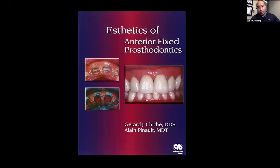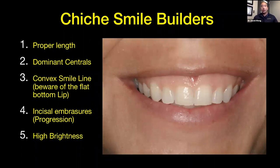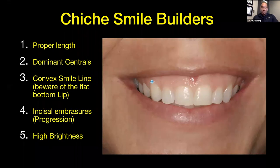Some of this other work we'll quote, in addition to Dr. Vince Kokich's papers, is Jerry Sheesh's book, 'The Aesthetics of Anterior Fixed Prosthodontics' — a very popular textbook. Jerry has outlined things called smile builders, where he outlines the proper length, emphasizes the importance of the dominant centrals, talks about the convex smile line against the flat upper lip, the importance of progressive embrasures, and of course high brightness when talking about the white aesthetics.